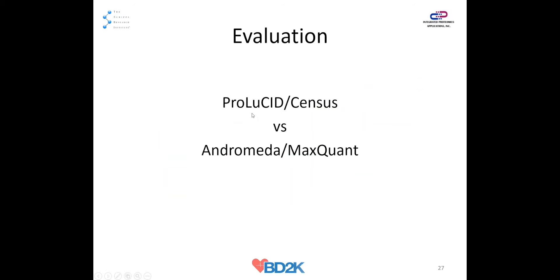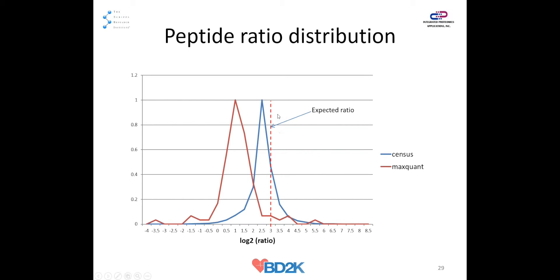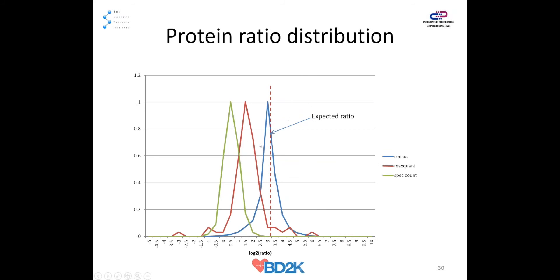We have compared our tool to different tools like MaxQuant and Proteome Discoverer. Using a HeLa sample in triplicate on the Fusion with different loading amounts, the Census results are pretty close to expected ratios with tight distributions. Compared to MaxQuant, Census results are closer to the expected ratio. We also compared to the spectral count approach — spec count is also tight, but intensity-based approaches are slightly better. With higher spectral count proteins the accuracy is better, but with lower spectral counts, accuracy decreases.